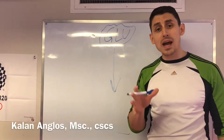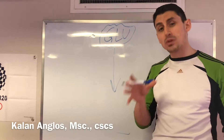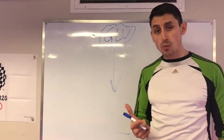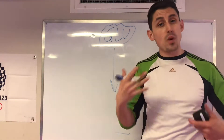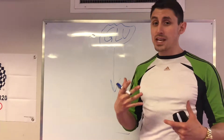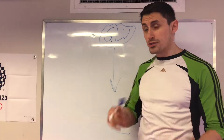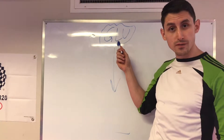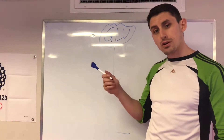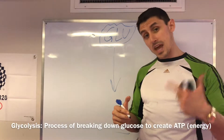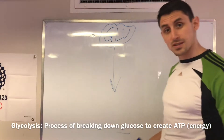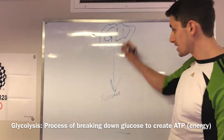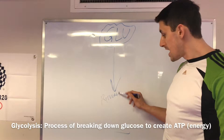Hey guys, welcome back. I want to talk a little bit more about blood lactate or lactic acid, how it affects performance and how we can measure it. First, where does blood lactate come from? Blood lactate comes from the breakdown of glucose. As you see here, I have a glucose molecule. When we break down glucose, it goes through a process called glycolysis. The end product of glycolysis is what we call pyruvate.